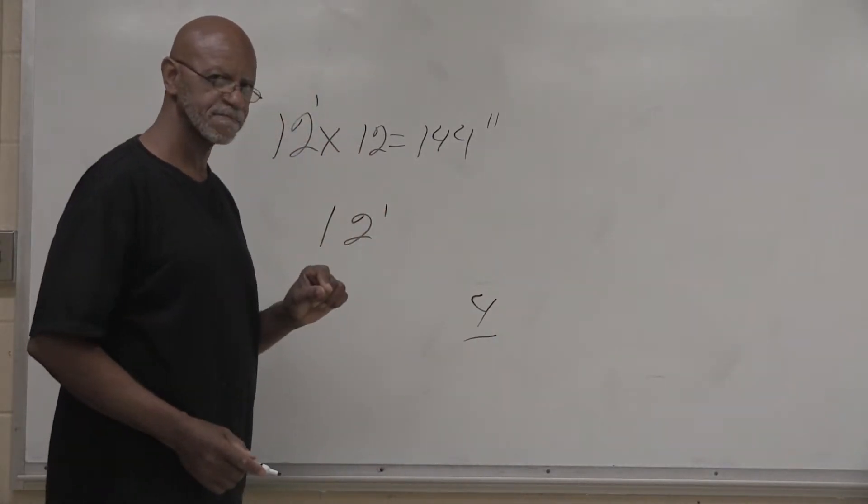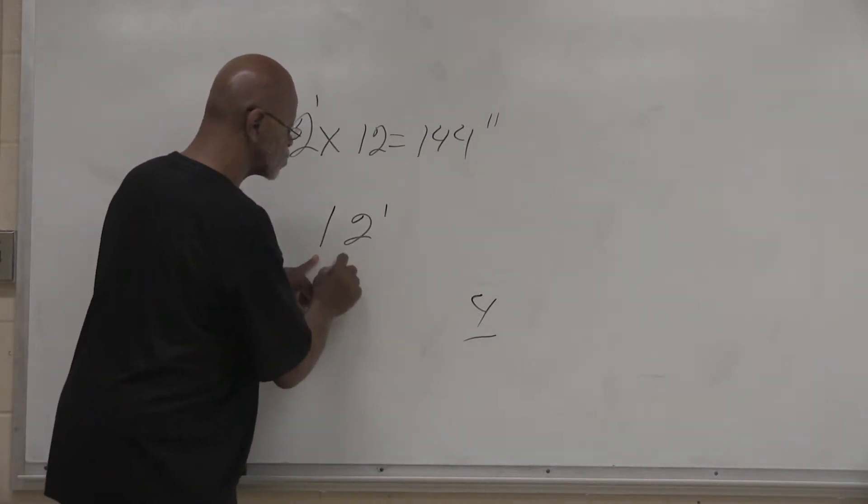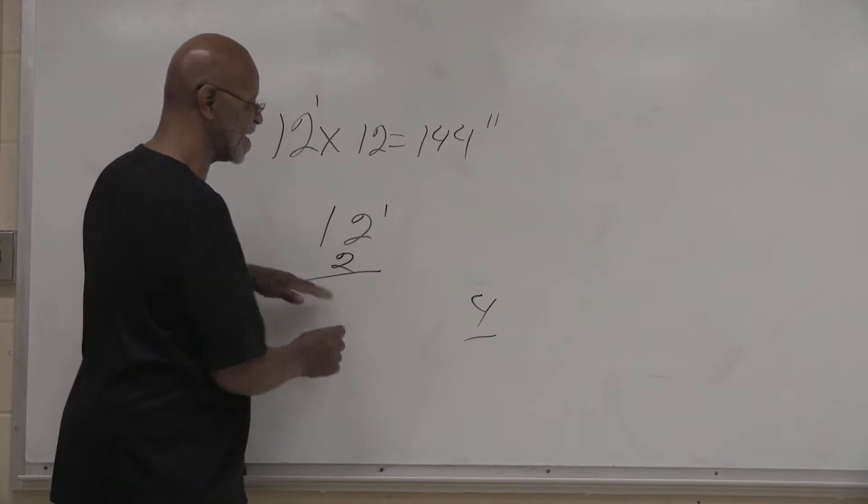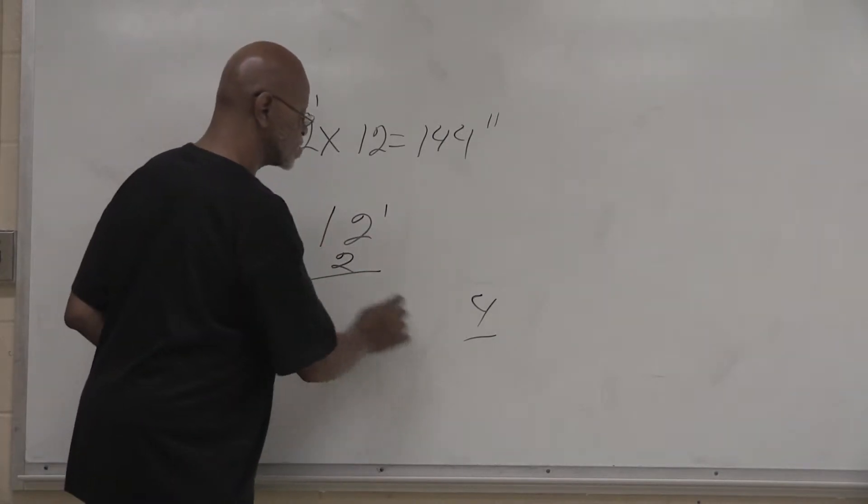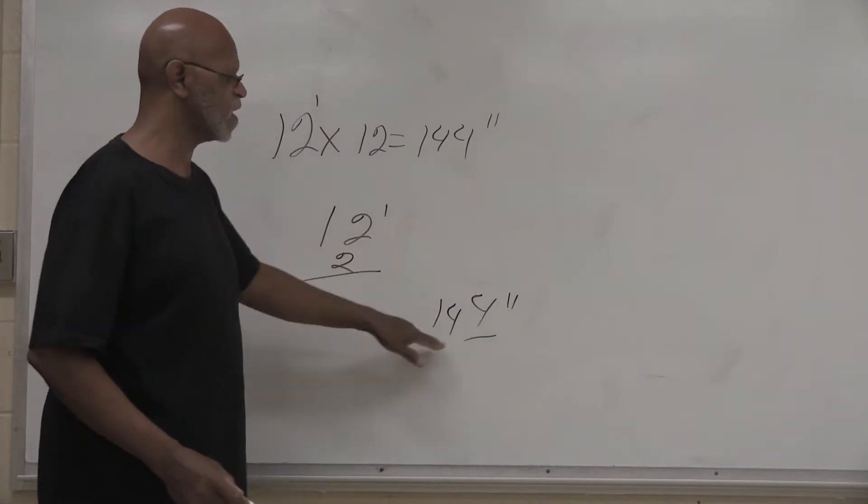And then this is 1 plus 1 equals 2, but we're going to place it here to add to the original number, which is 14. So 12 times 12 is 144.